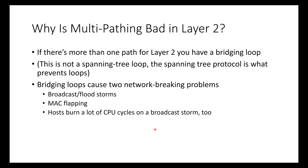Before we talk about how we adjust the rules, let's talk about the rules and why we have them. If there's more than one path in layer two, we typically get a bridging loop. Sometimes people erroneously call this a spanning tree loop, but spanning tree is what prevents the loop. Bridging loops cause two general network-breaking problems: broadcast and flood storms, and MAC flapping. They generally will take down a network.